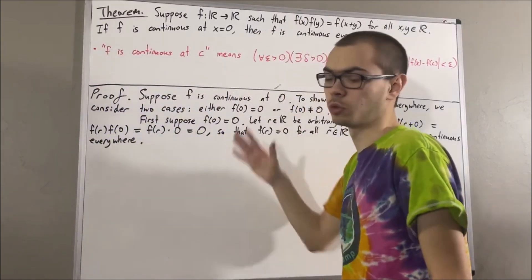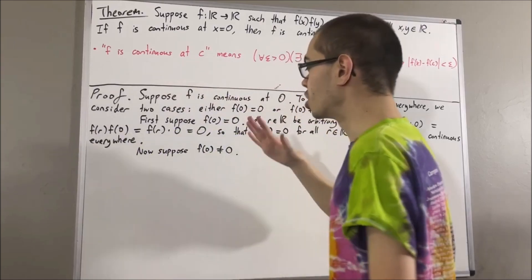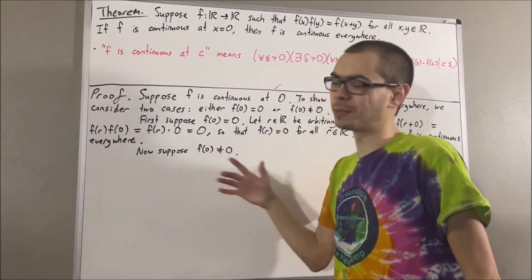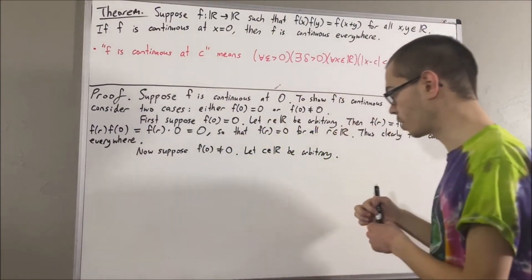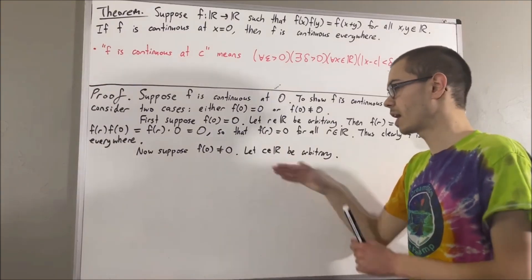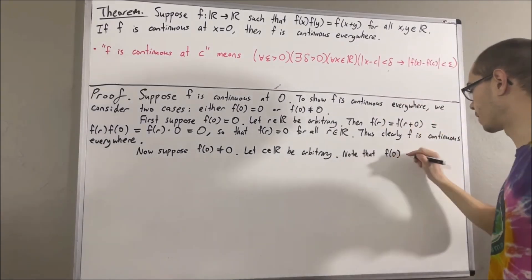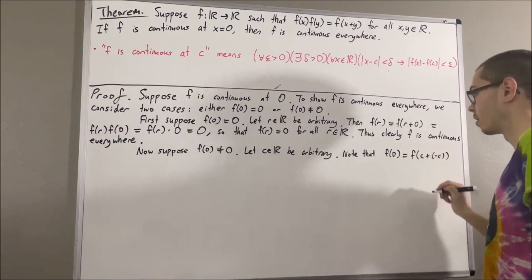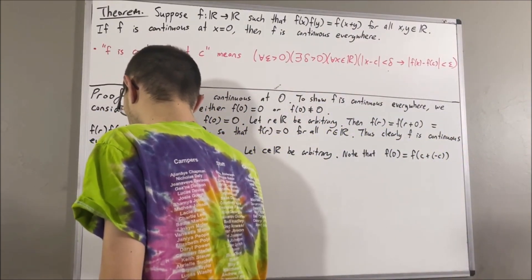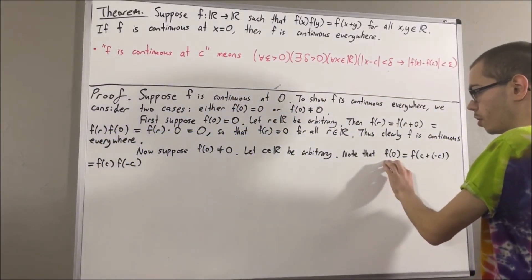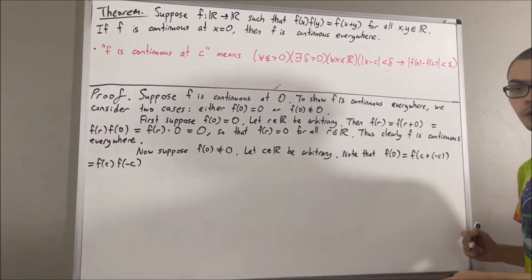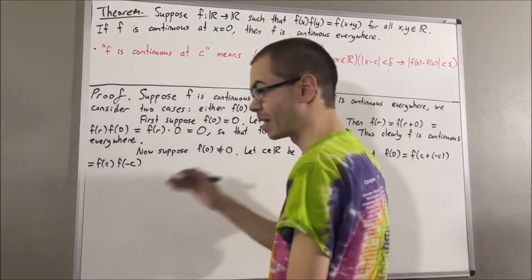Now let's consider the case where f of 0 is not equal to 0. To prove that f is continuous everywhere, we're going to show that for all real numbers c, f is continuous at c. So let's consider an arbitrary real number c. Before we demonstrate that, we first claim that f of c is not equal to 0. We can re-express f of 0 as f of c plus negative c, and then, according to the rule the function satisfies, this is just f of c times f of negative c. Since f of 0 is not equal to 0, f of c cannot equal 0, because if it did, this would be 0 times f of negative c, which equals 0, making f of 0 equal to 0 — a contradiction. So we must have f of c is not equal to 0.